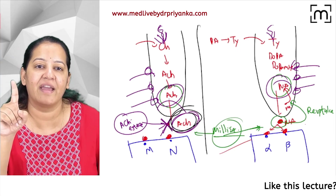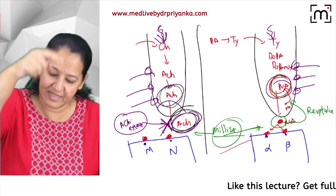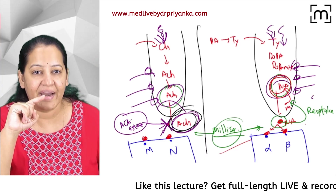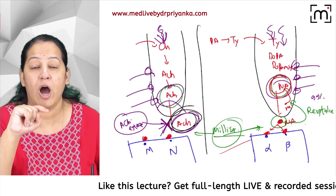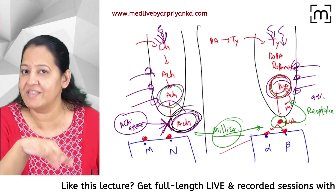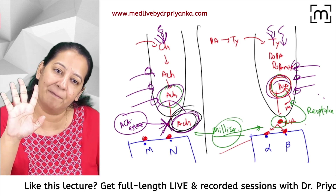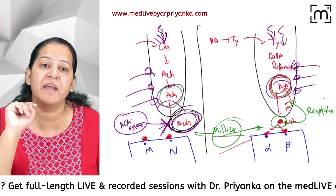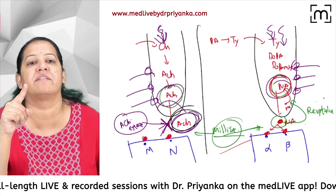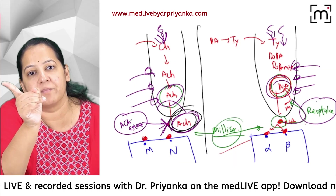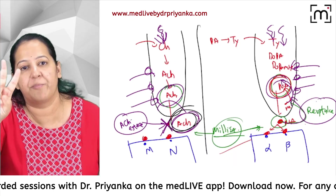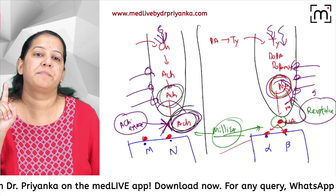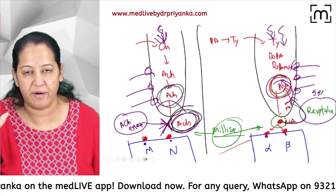From the cytoplasm, noradrenaline is taken back up into the vesicle — a two-step reuptake. It is stored in the vesicle until the next impulse. This accounts for 99% of noradrenaline termination: first into the cytoplasm, then back into the vesicle.